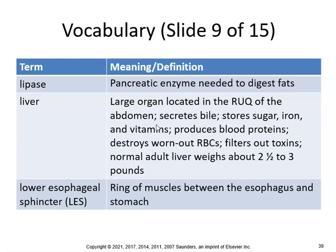The liver is a large organ located in the right upper quadrant of the abdomen. It secretes bile, stores sugar, iron, and vitamins, produces blood proteins, destroys worn-out red blood cells, filters out toxins, and weighs about 2.5 to 3 pounds in a normal adult. It also helps the body make vitamin D — along with the skin and kidneys. Your liver also makes all the cholesterol you will ever need, so you never have to eat animal products to get it.